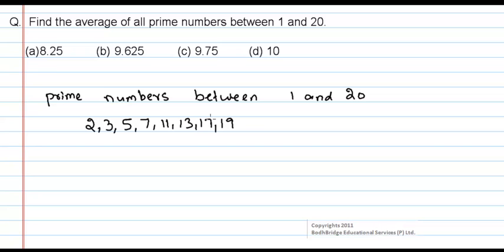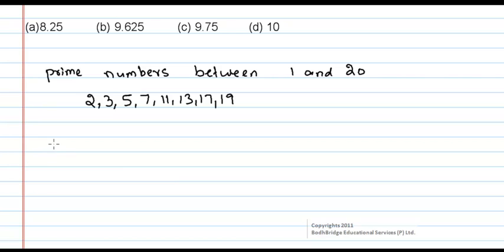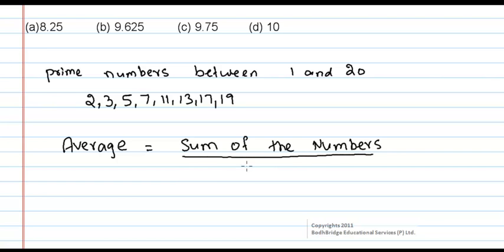Now you want the average of all these prime numbers. Average is always given as sum of the numbers divided by number of numbers.